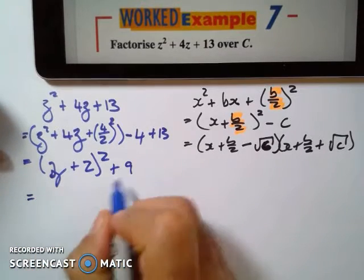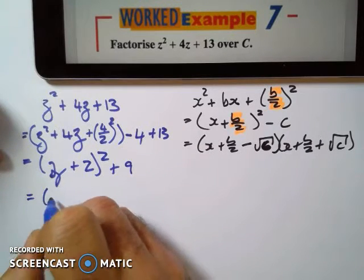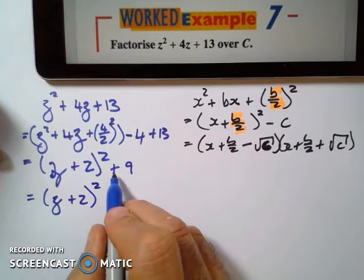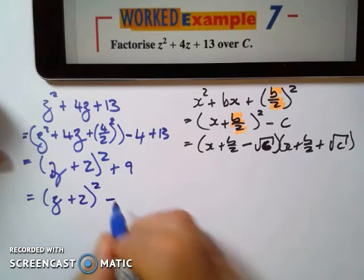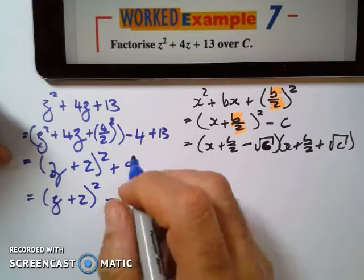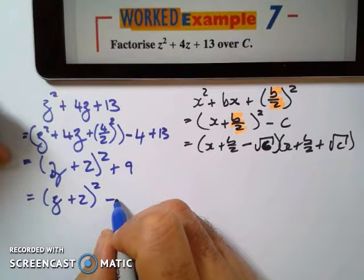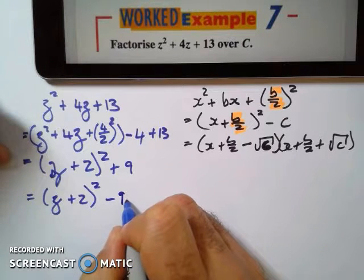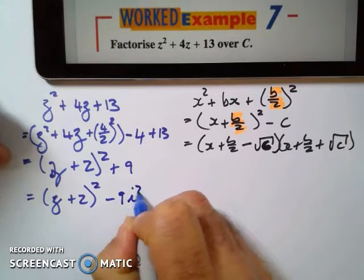But what I can do is I can change that to a negative 9. I'm going to say this is z plus 2 squared and I'm going to change this plus 9 to a negative. But I can't just change it to a negative because I can't just multiply. So what I'm going to do is I'm going to say this is the same as, what is negative 1? Negative 1 I can say is i squared.